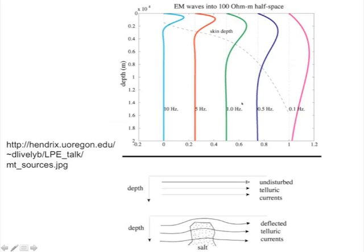Here's an illustration of skin depth in meters for a half-space of 100 ohm-meters. As the frequency goes down, the skin depth goes up — starting at 0.2 km at 10 Hz and going down to 1.6 km at 0.1 Hz. For crustal and upper mantle work we need about 30 km of skin depth, so we'll be working with frequencies far lower than that — frequencies with periods of about 12 hours, similar to the diurnal variation caused in the magnetic field by the ionosphere.